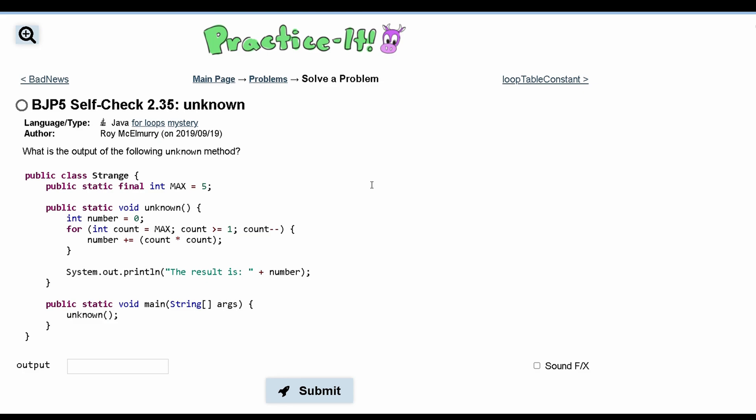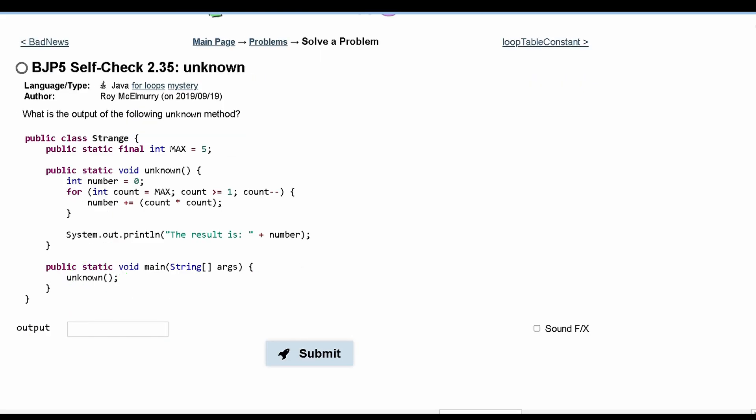So we have a public class Strange, and inside of here we have a public static void main right here. And in our main method, all we're doing is calling our unknown method right here. And our unknown method is right here. It's all of this code. So this is what we're going to be looking at.